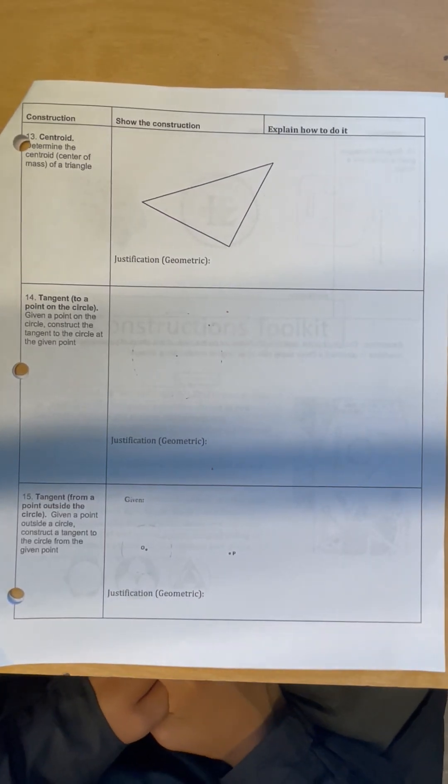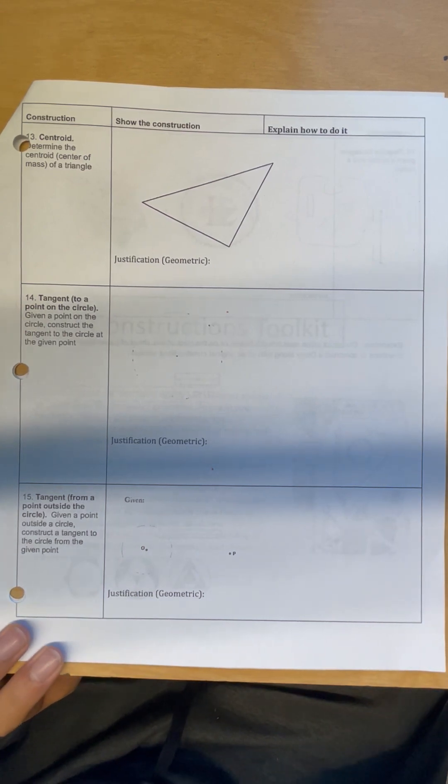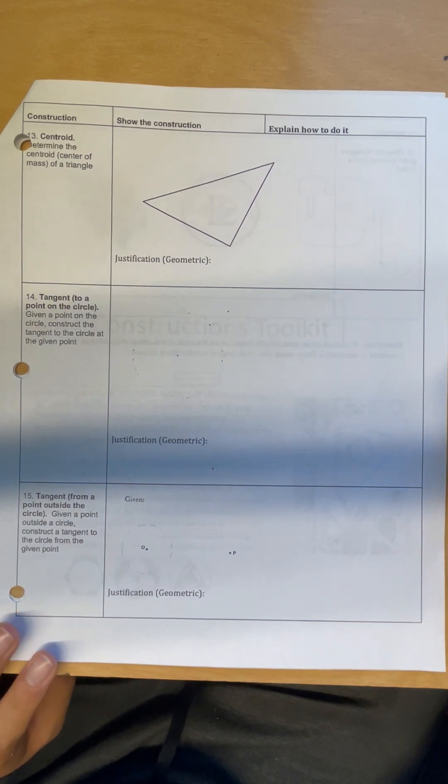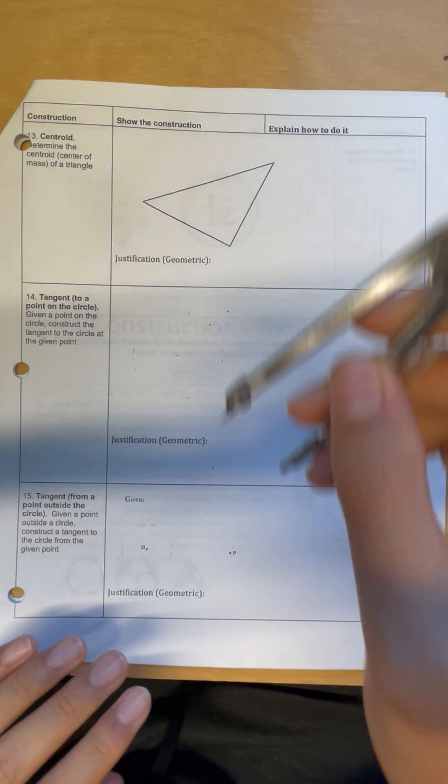Hey guys, Kyle here, and today we'll be doing the construction to find the centroid of a triangle. Now, the centroid is simply the point at which all the medians of the triangle intersect, so in order to find the medians, we'll have to find the midpoints of each of the segments of the triangle.